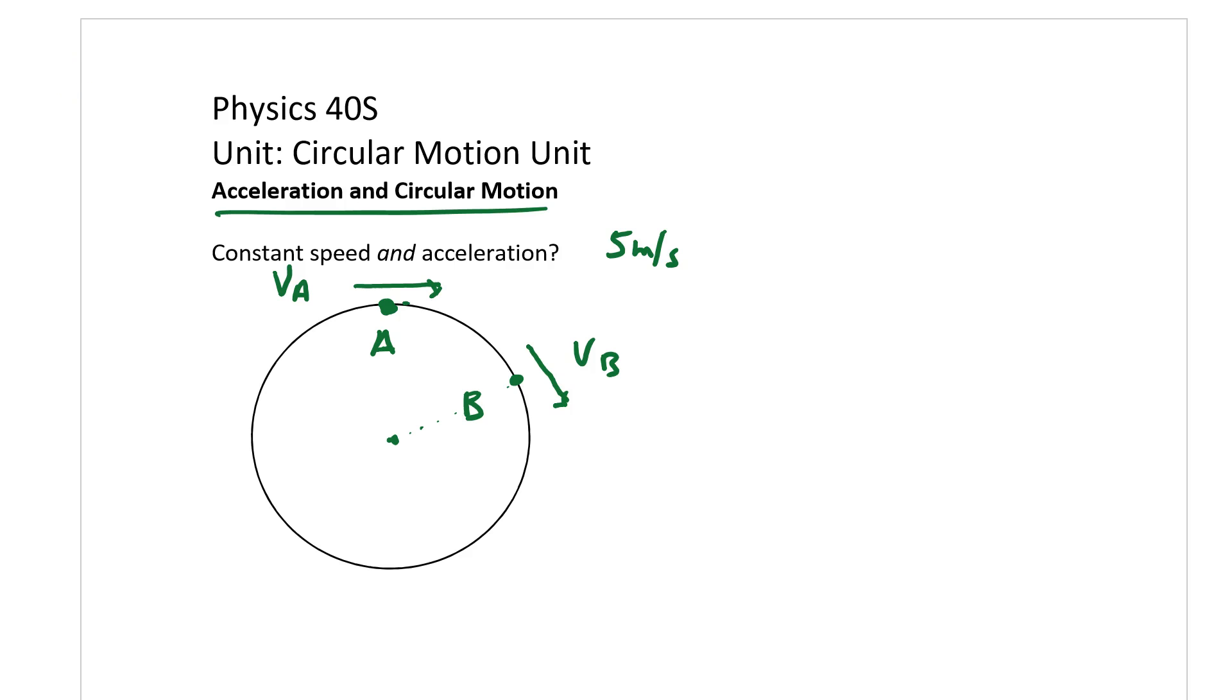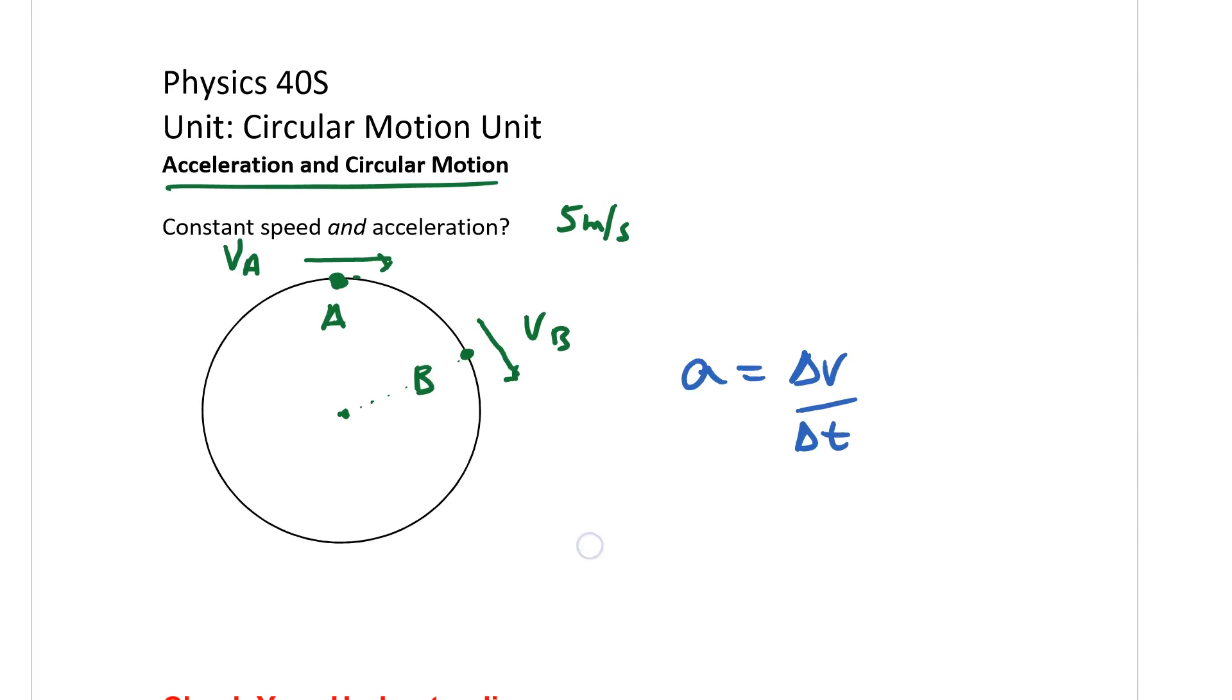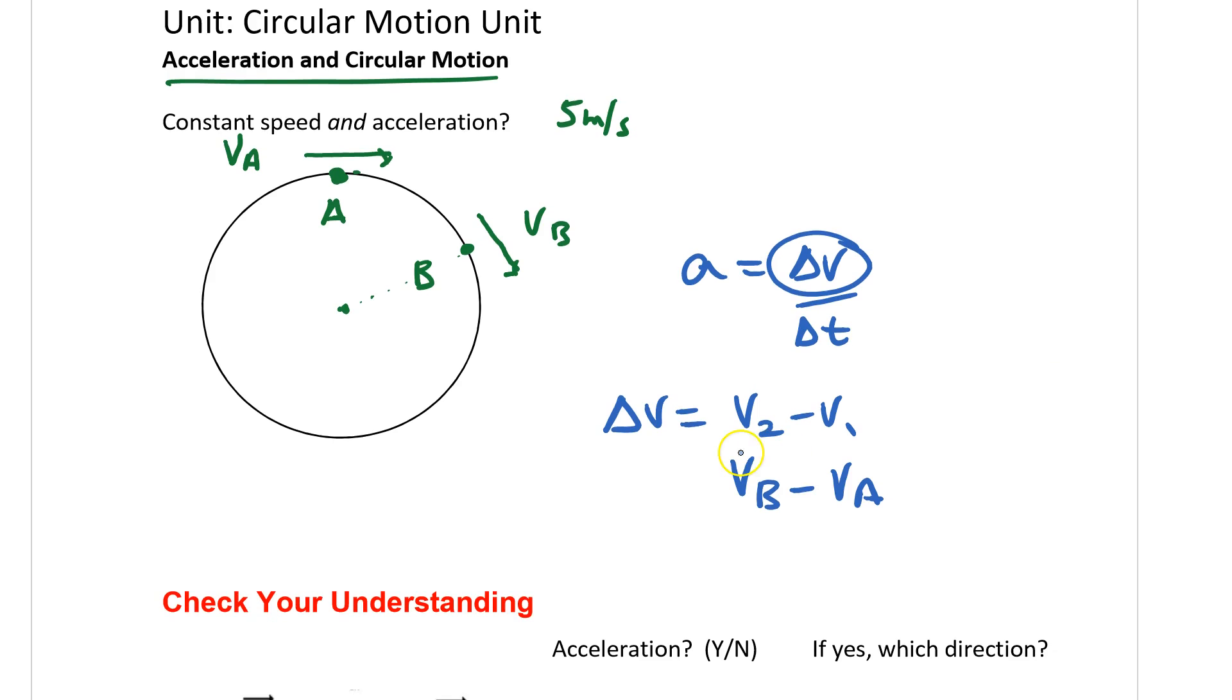So if our definition of acceleration is the change in velocity divided by how much time it goes, what I'd like to do is think a little bit more clearly about what this change in velocity is. Well the change in something is always the second one minus the first one. So in this situation this would be the velocity at B minus the velocity at A.